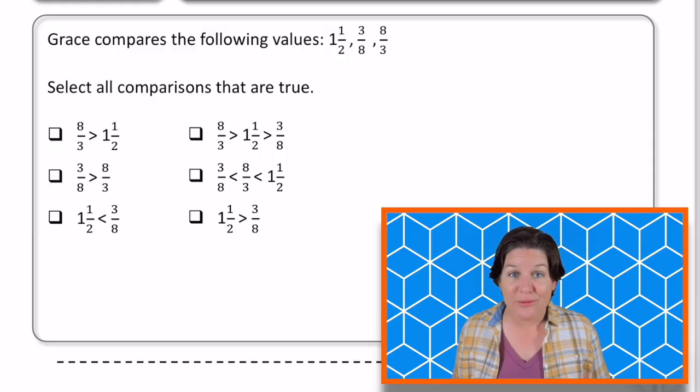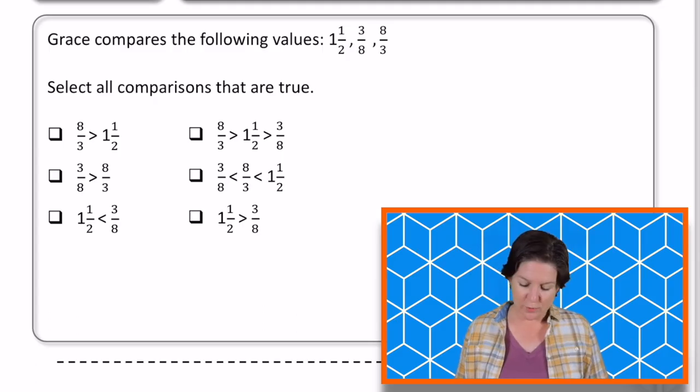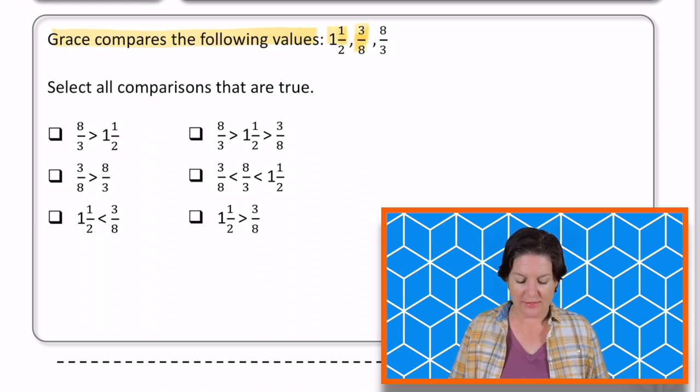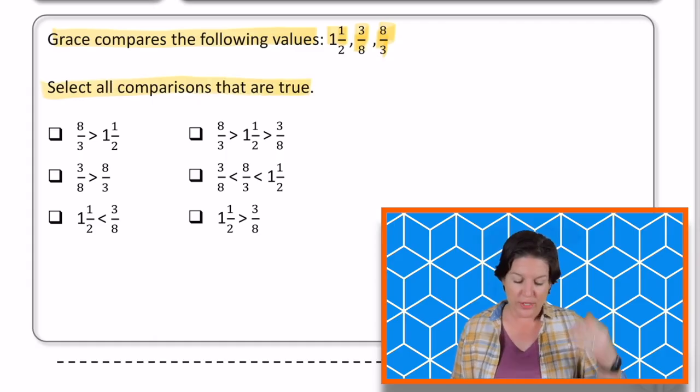Alright, welcome back, 4th grade, here we go. So this one says, Grace compares the following values: 1 1⁄2, 3 8ths, and 8 3rds. Select all comparisons that are true.